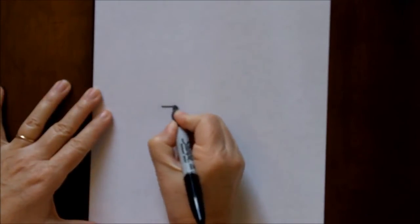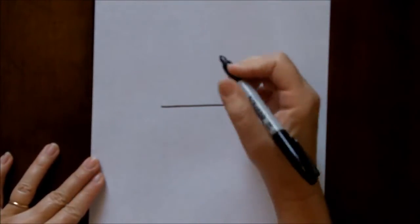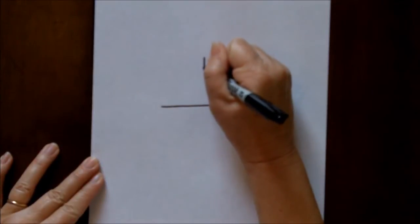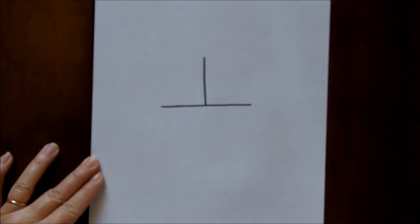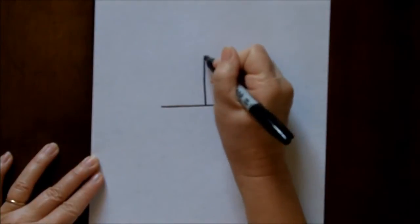We're going to start with a straight line going across your paper. Then, about the middle area, we're going to go up a little bit so we form two right angles.